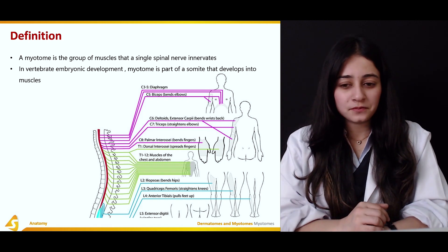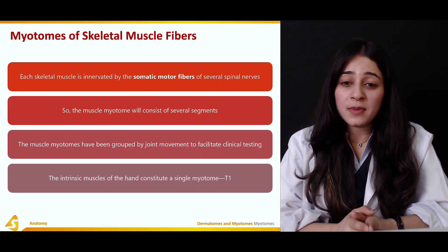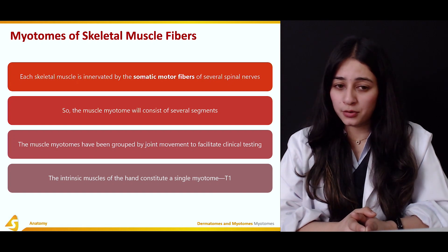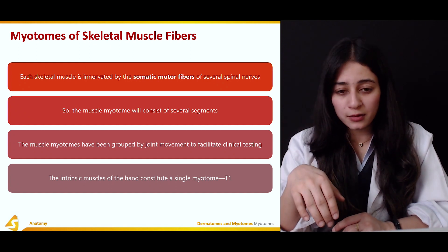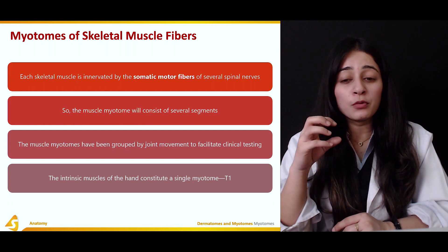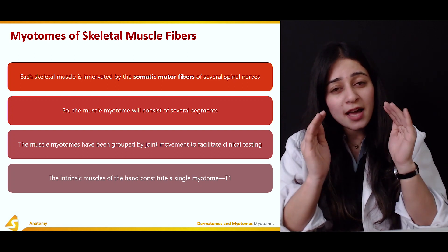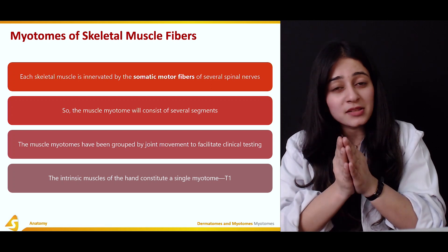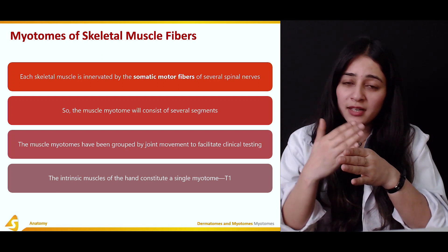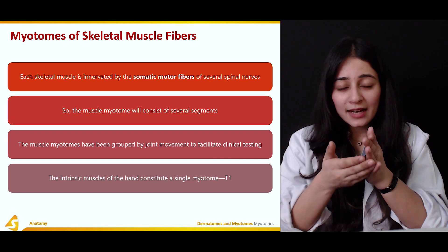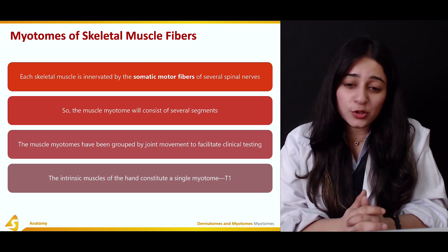Myotomes involve skeletal muscle fibers. Every skeletal muscle is innervated by somatic motor fibers of several spinal nerves, so a muscle myotome will consist of several segments. A muscle can be divided into multiple segments, and within those segments, different nerves are innervating and supplying that muscle.